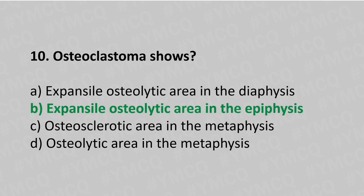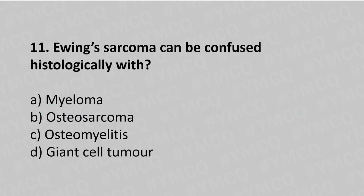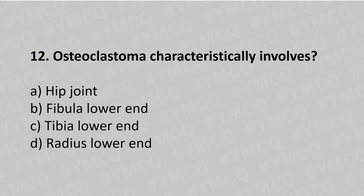Question number eleven: Ewing sarcoma can be confused histologically with option A myeloma, option B osteosarcoma, option C osteomyelitis, option D giant cell tumor. The answer is option C, osteomyelitis.